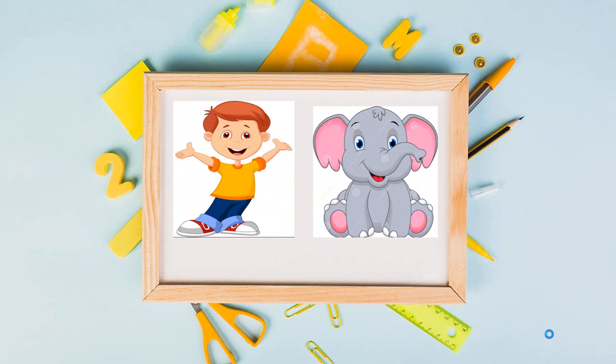When we talk about articles A and AN, as shown in the picture: 'This is a boy' and 'an elephant.' A boy begins with the B sound, which is a consonant sound, so we use article A. Whereas elephant begins with the E sound, which is a vowel sound, so we use AN — it's an elephant.